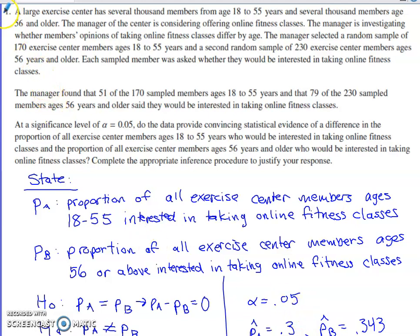In this video we will talk about problem number one from the 2024 AP Stats free response set. This is the problem from 2024 that dealt with inference. They start us off by saying we've got a large exercise center with several thousand members from age 18 to 55 and several thousand more members age 56 and older. The manager of the center is considering offering online fitness classes and is investigating whether or not the members' opinions of taking online fitness classes differs by age.